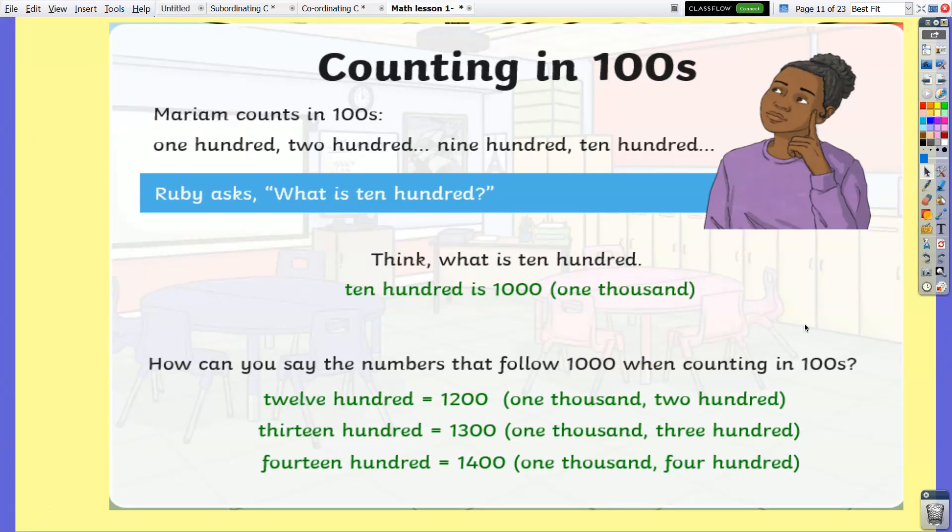Counting in hundreds is the easiest of all. Mariam counts in 100s: 100, 200, 300, 400... Ruby asks, what is 10 hundred? Think: what is 10 hundred? Ten hundred is 1000. How can you say the numbers that follow 1000 when counting in hundreds? We have 1200 or twelve hundred, 1300 or thirteen hundred, 1400 or fourteen hundred.